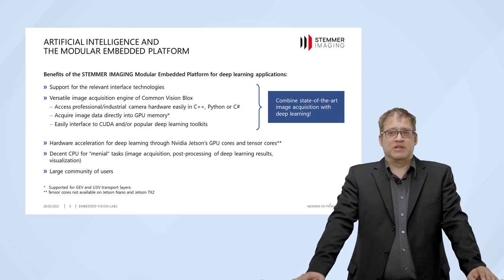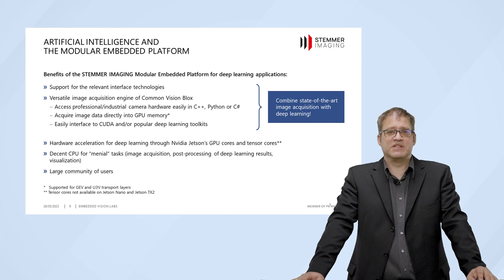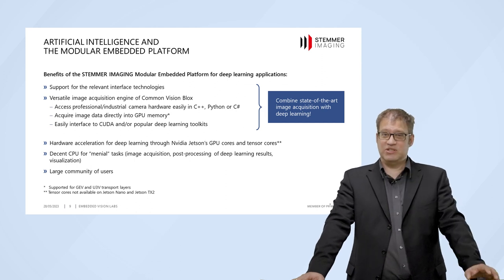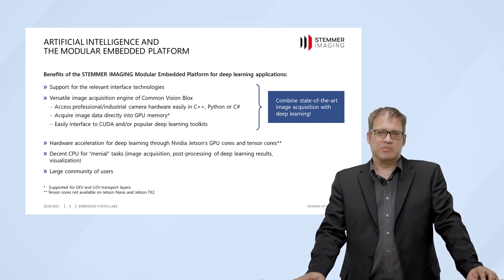The hardware acceleration for deep learning comes from NVIDIA Jetson's GPU cores and, more importantly, the Tensor cores, which are available on the Xavier NX and the Orin system. On top of that, we have a decent CPU for tasks like image acquisition, post-processing of deep learning results, and visualizations. There is also a large community of users for the Jetson platform who exchange ideas, code snippets, and helpful hints on forums and websites.